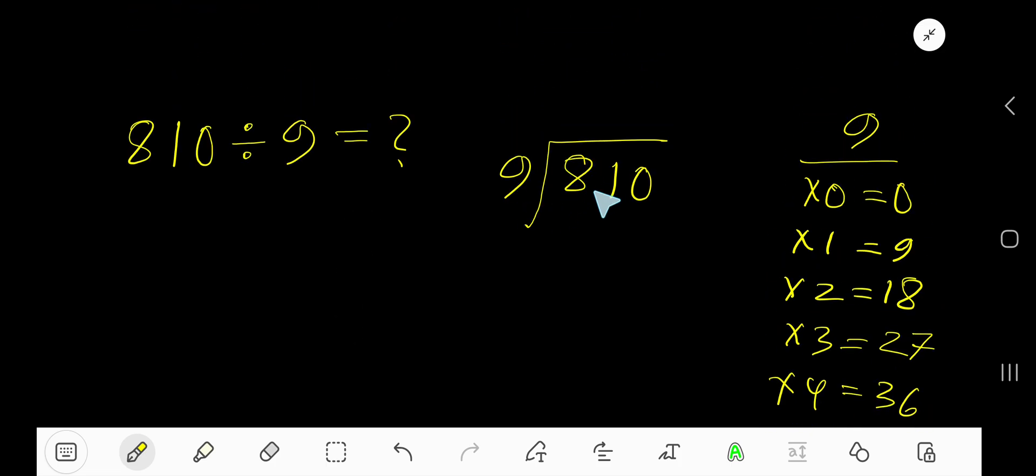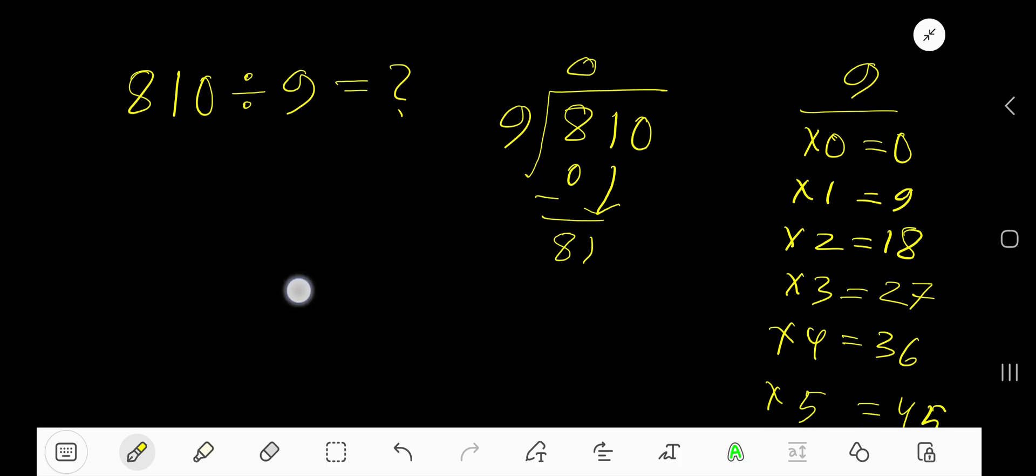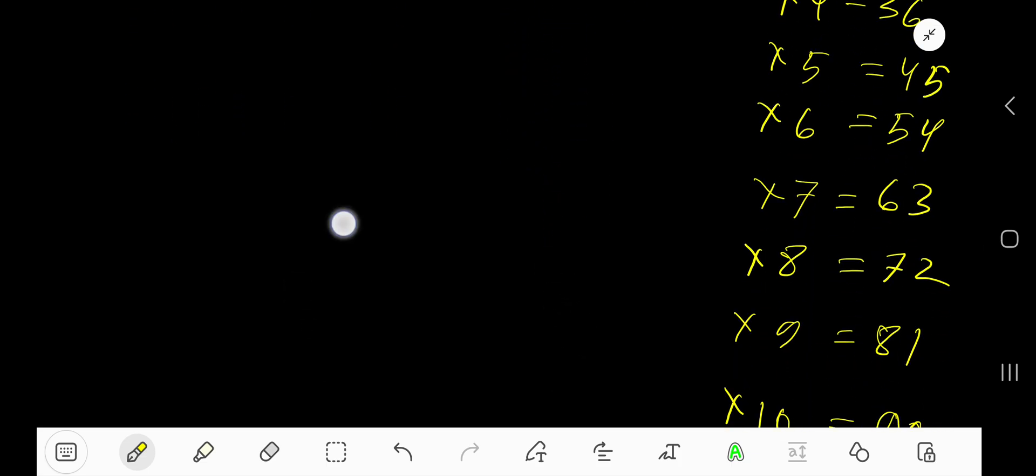9 goes into 8 how many times? As 8 is less than 9, so 0 times. 0 times 9 is 0. Subtract 8, bring down this 1. 9 goes into 81 how many times?